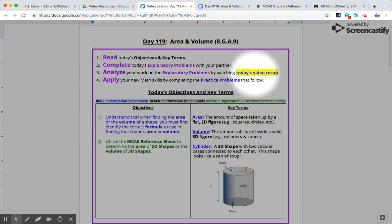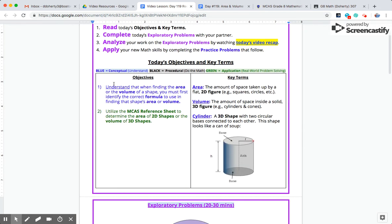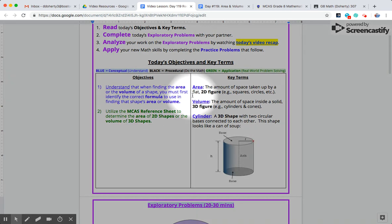Before we get into the problems, we're going to do a quick review or overview of the objectives and the key terms. Today our big focus is finding area, which is how much space is taken up by 2D figures like squares and circles, and also finding volume, which is how much space is taken up by solid three-dimensional figures. We've done cubes and prisms before in prior grades, and in eighth grade we're going to move into cylinders and cones, and you'll see both of those today in the practice problems.